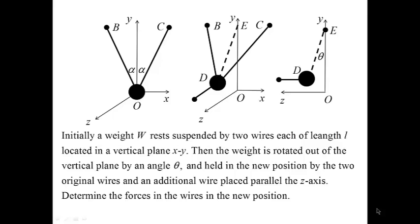In this problem, we have a weight suspended by two wires. Initially, the weight and wires are in the vertical plane x-y. The suspension is symmetric, so that the wires have the same lengths, and we have two angles alpha, so that y is a symmetry axis.